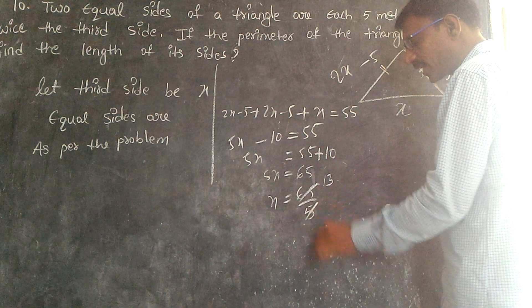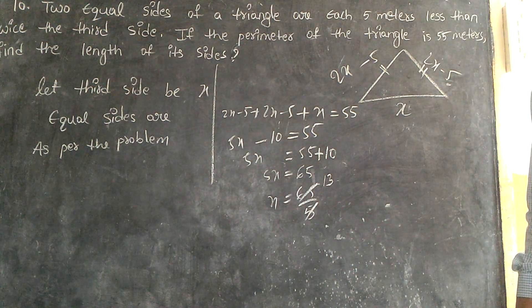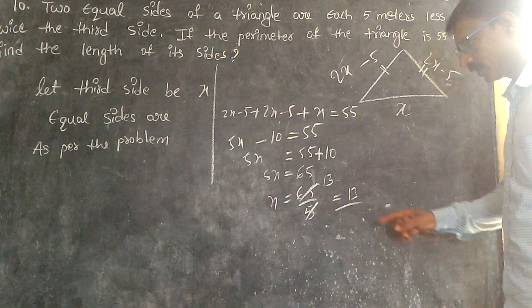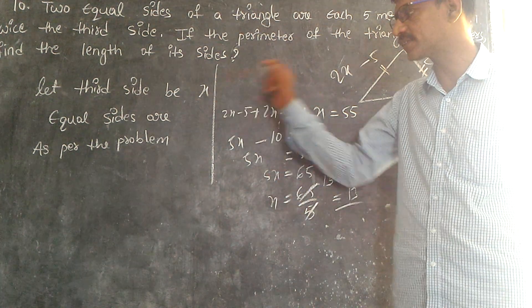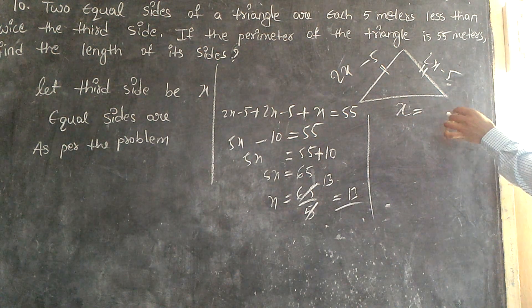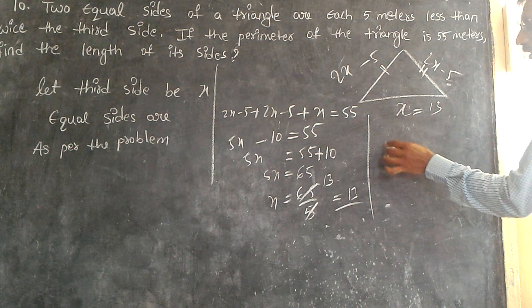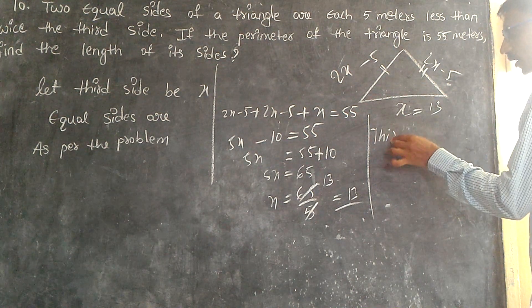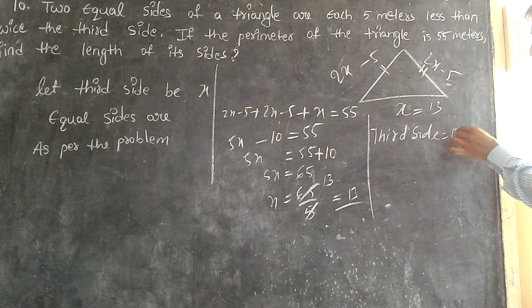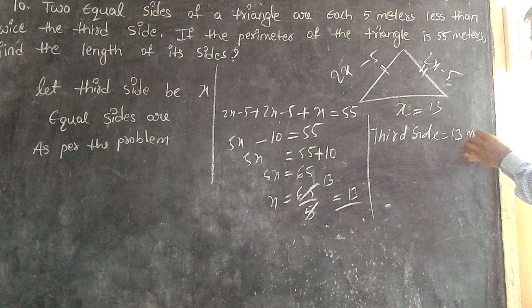So x equals 65 by 5, how many times? 13. Therefore the third side is equal to 13 meters.